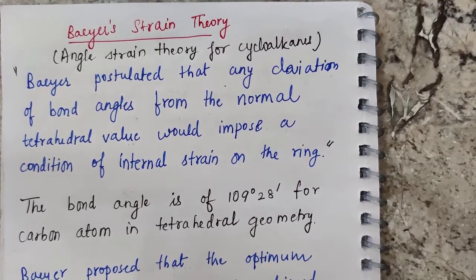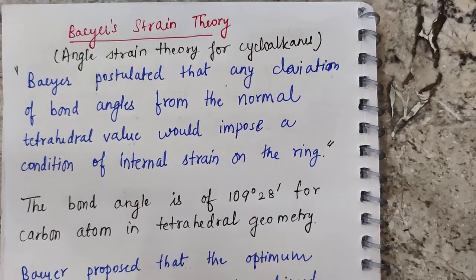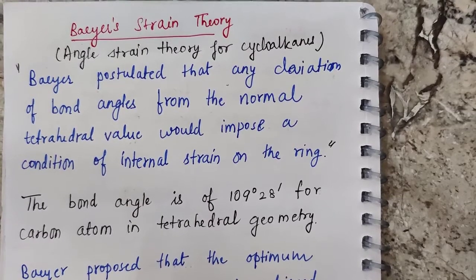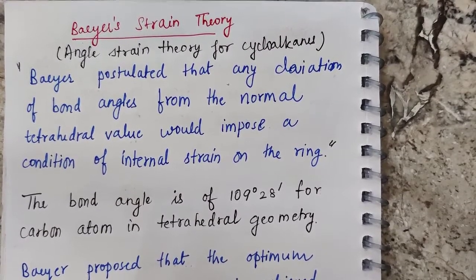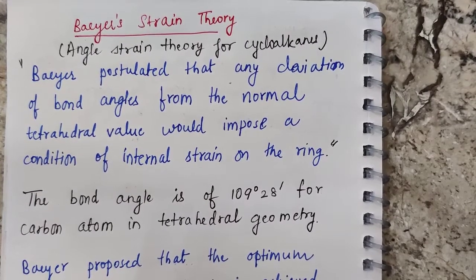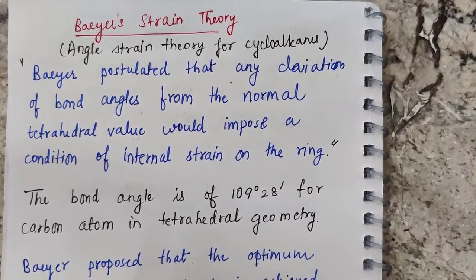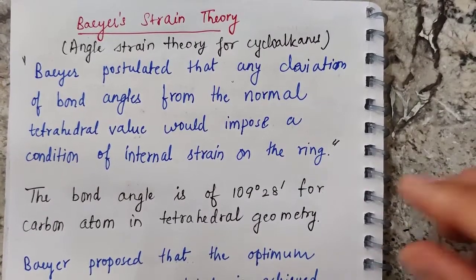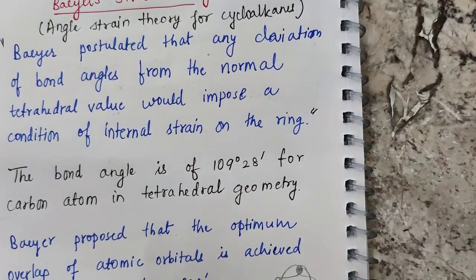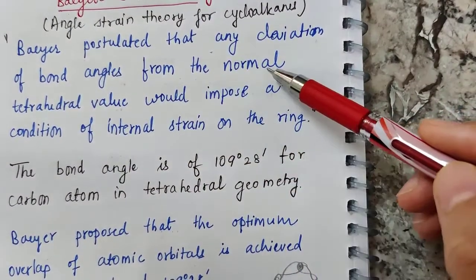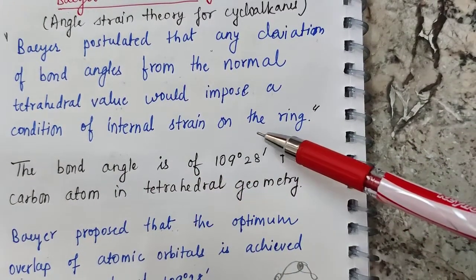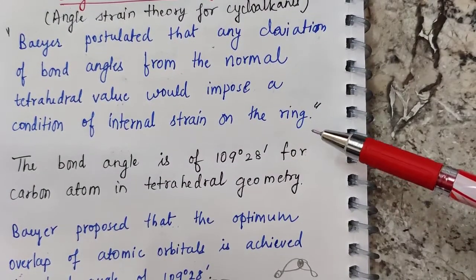Good morning students. Today we are going to study about Baeyer's strain theory and the orbital picture of angle strain. Baeyer's strain theory is nothing but angle strain theory, proposed by the scientist Baeyer. He postulated that any deviation of bond angles from the normal tetrahedral value would impose a condition of internal strain on the ring.